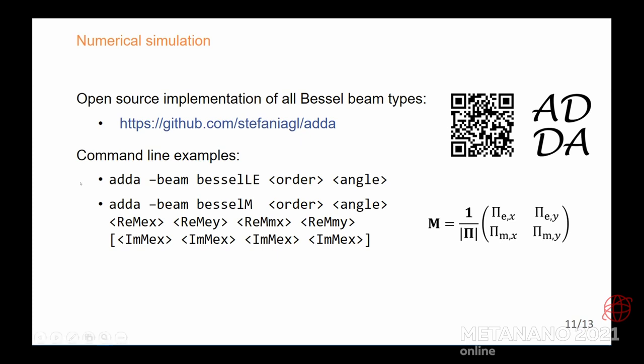We implemented our Bessel beams in two ways. The first one is direct one. Here you specify the beam type. For example, it's LE type. Then you specify the beam order, half cone angle, and like this. The second way is a general one. Here you specify a matrix M for arbitrary or general Bessel beam type. You can also specify here order, angle, and then four real components of matrix M. And then there are optional imaginary parts, because in most cases the matrices for Bessel beams is real. There's no need to specify all these imaginary parts.